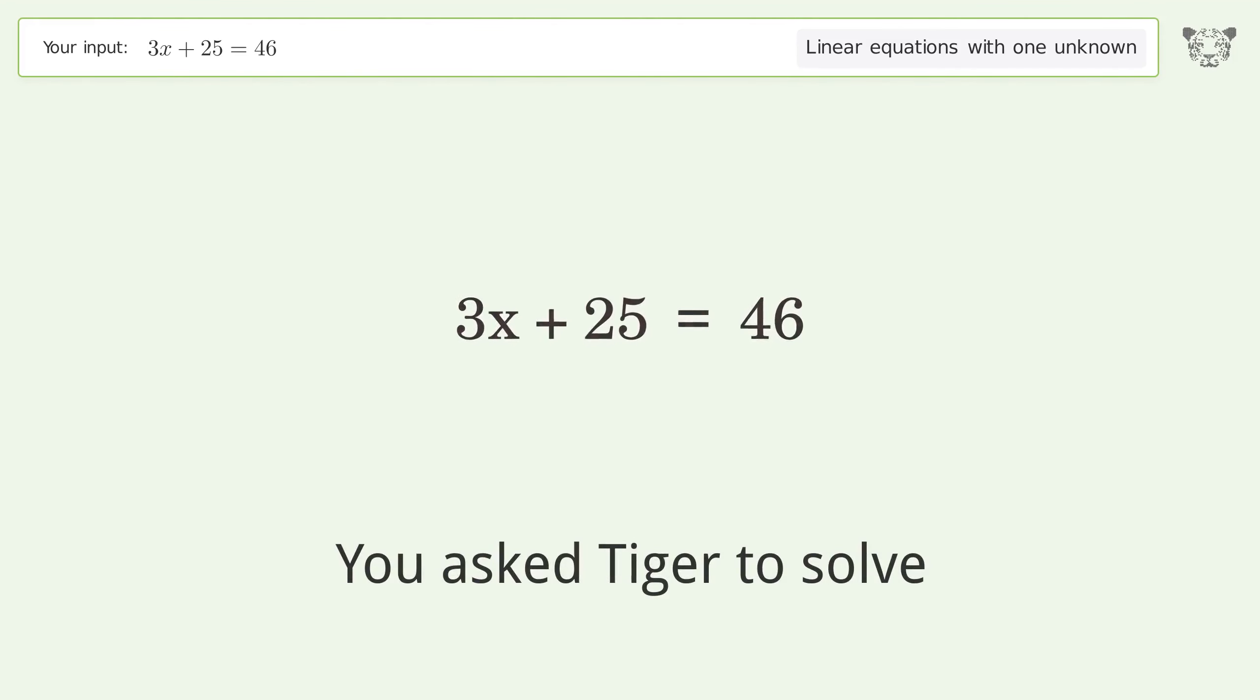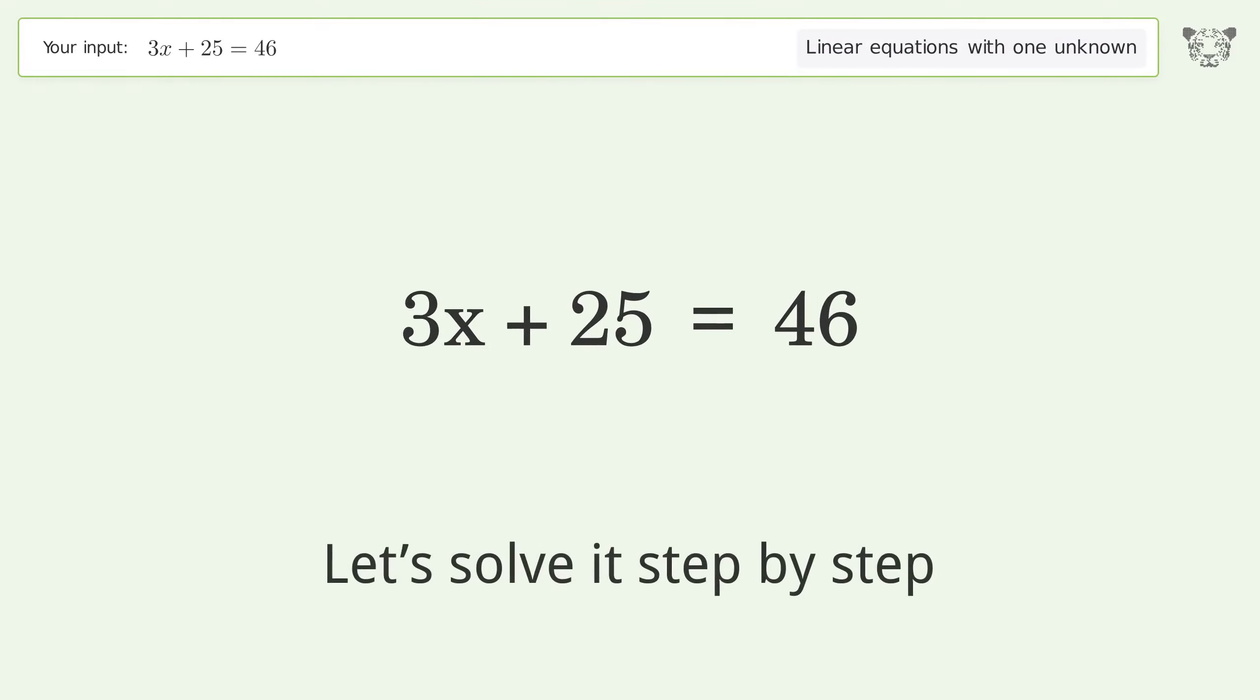You asked Tiger to solve. This deals with linear equations with one unknown. The final result is x equals 7. Let's solve it step by step.